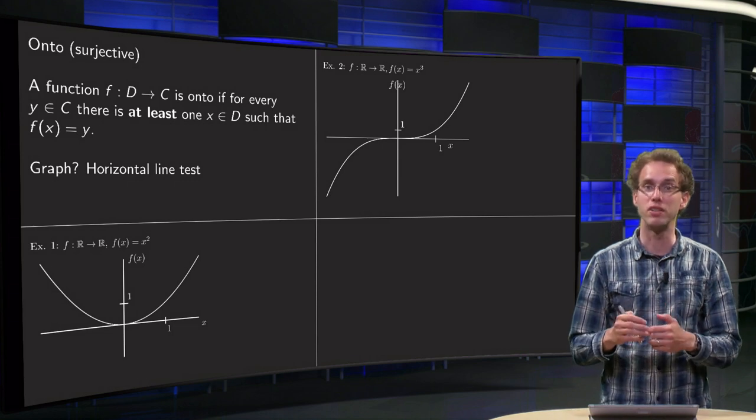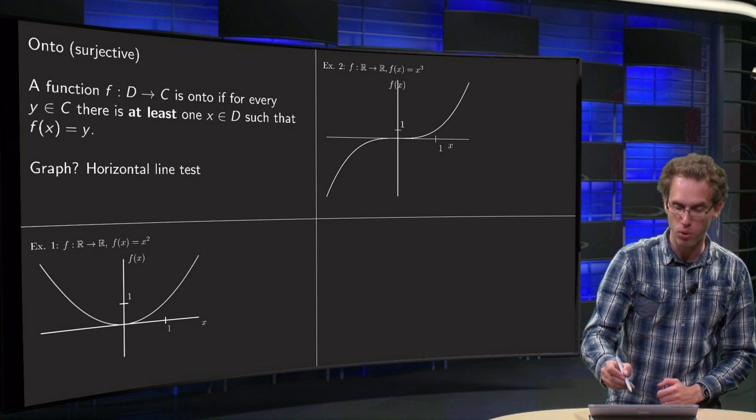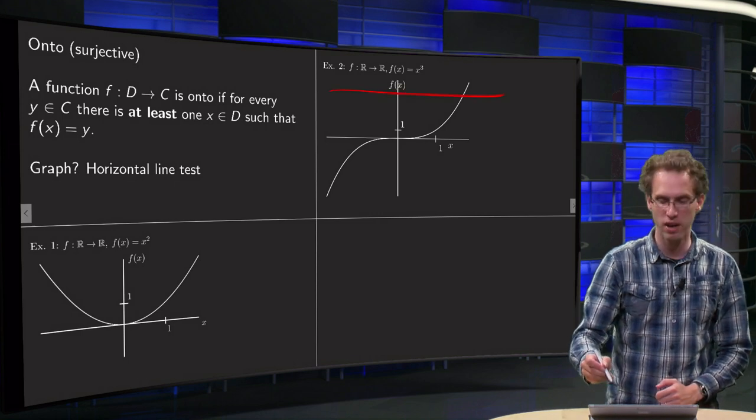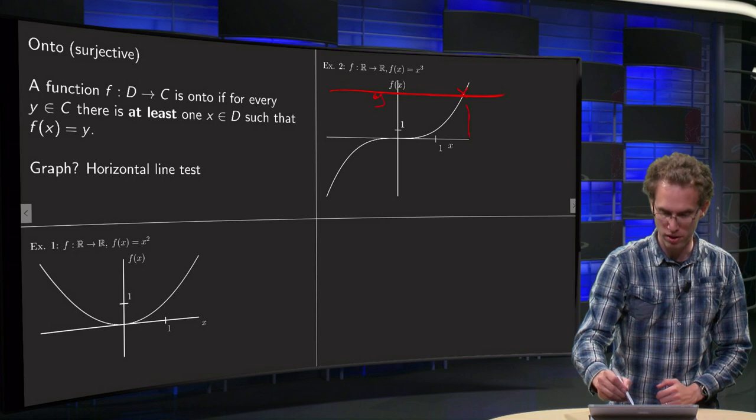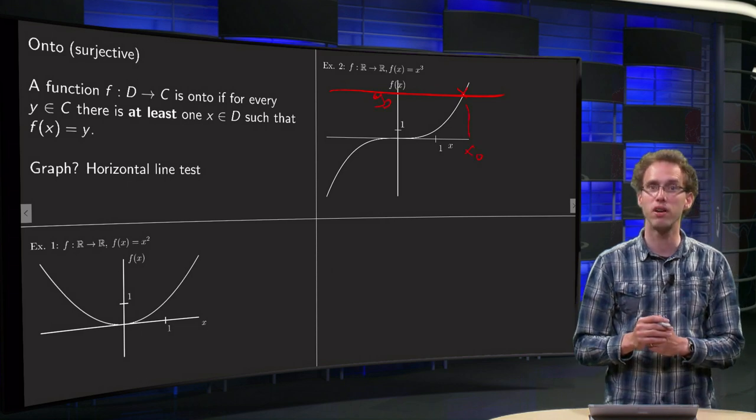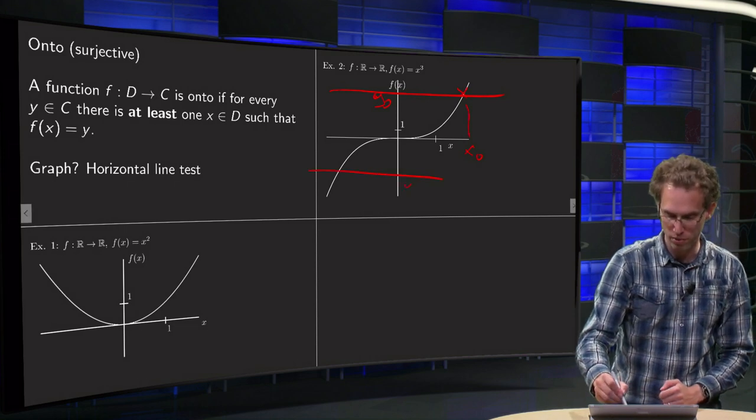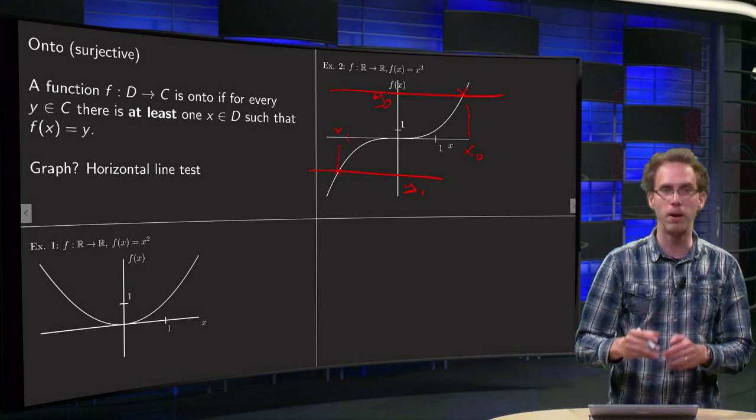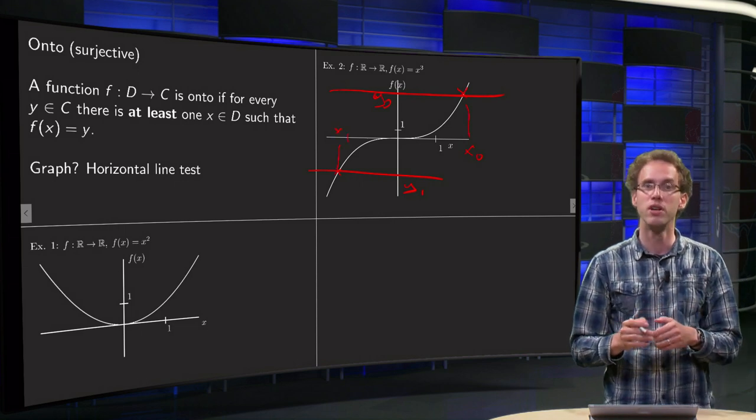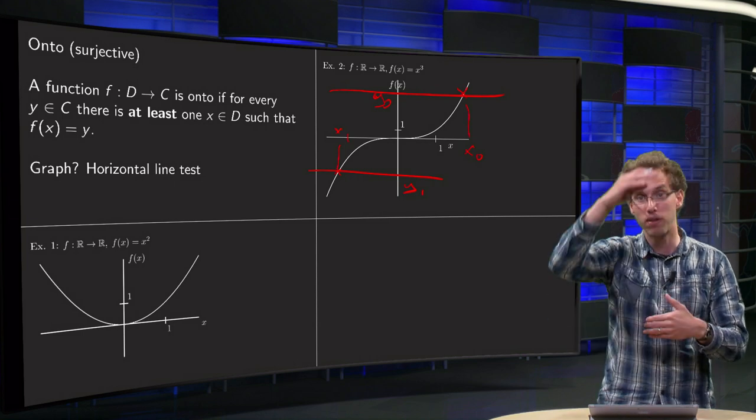Second example, f equals x cubed, f from R to R. We are again going to draw horizontal lines. Over here we intersect the graph at y₀, so this value x₀ is mapped to that particular value of y₀. Or we can go a bit lower to height y₁, we intersect the graph over here, so this x₁ is mapped to that particular value of y₁.